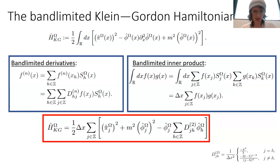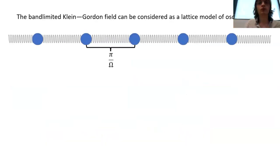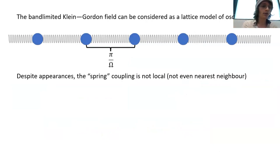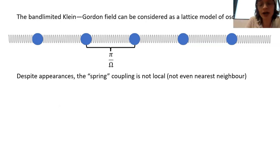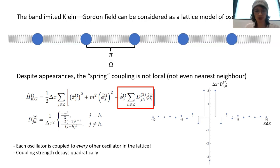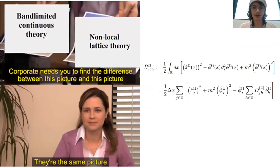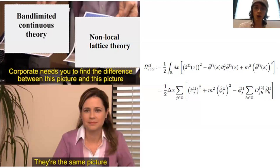Combining the discrete derivative and the discrete inner product gives us a discrete model that has perfect equivalence to the continuous representation of our band-limited Klein-Gordon field, with non-local coupling given by D. That means our continuous theory has an equivalent lattice model — we can treat it as a lattice model with harmonic oscillators where each ball represents a harmonic oscillator and each spring represents coupling between oscillators. These are 'magic springs' that couple every oscillator to every other oscillator in the lattice non-locally, decaying quadratically. Every band-limited continuous quantum field has an equivalent non-local lattice theory.